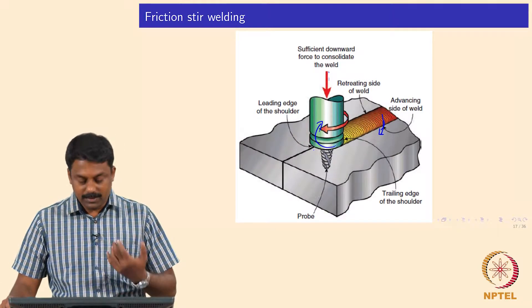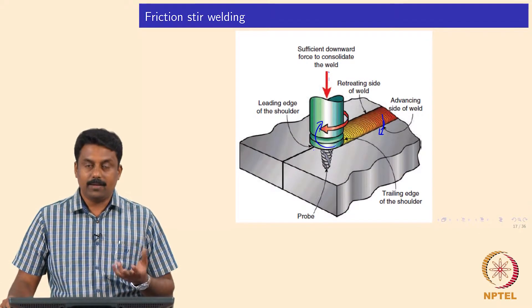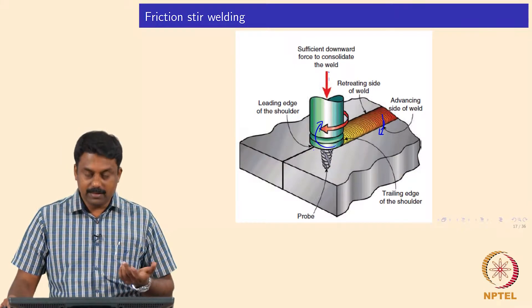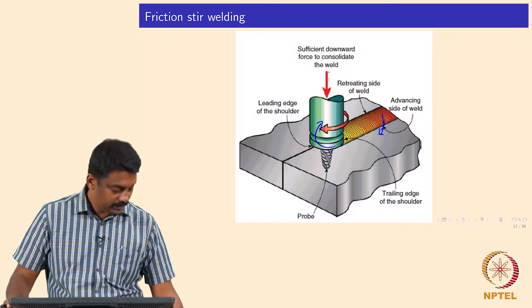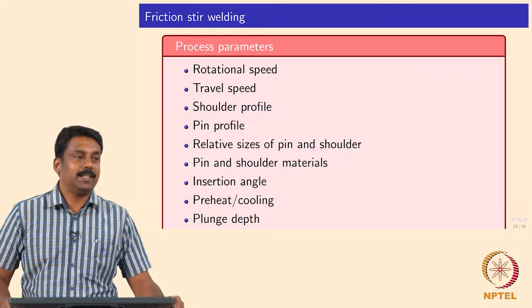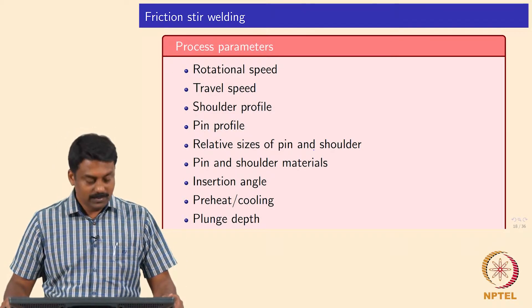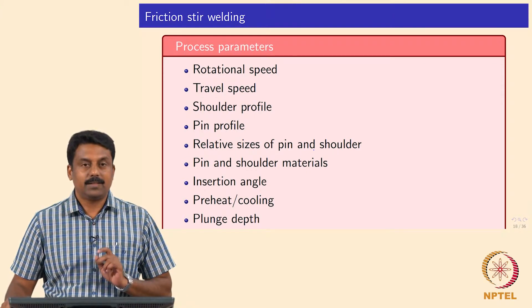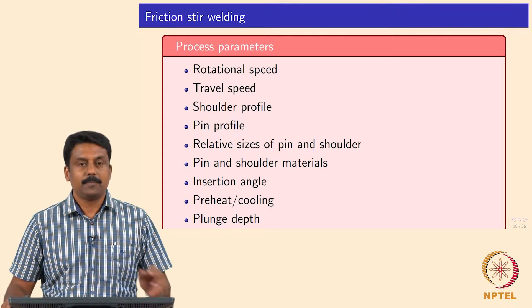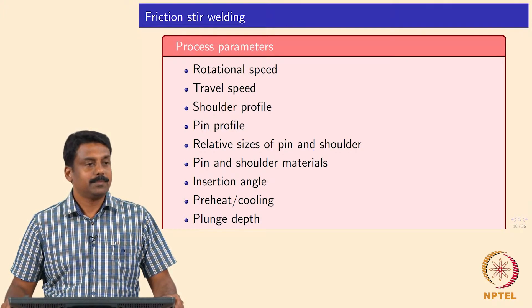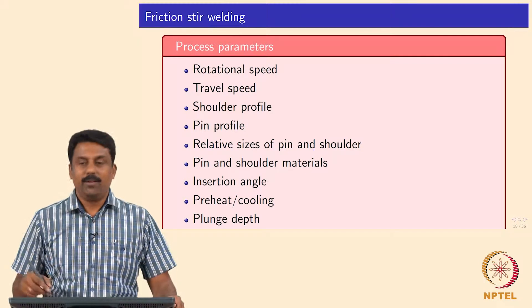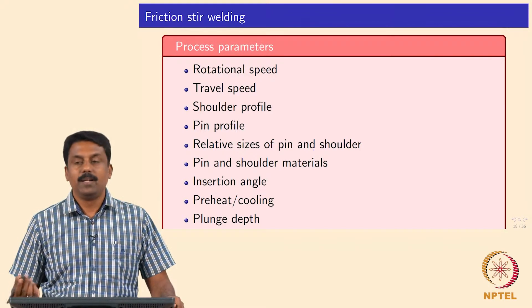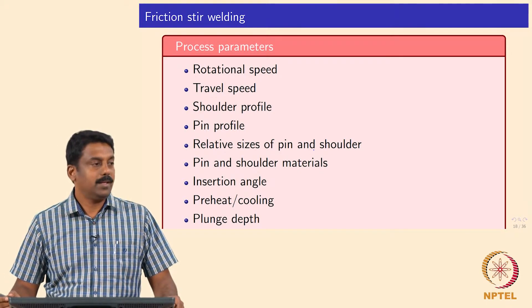The process parameters controlling weld characteristics in friction stir welding include: first, the rotation speed of the tool in RPM — how fast you rotate; and second, the welding speed, since the pin is moved along the interface either slowly or faster, which also determines weld quality as well as weld bead geometry.